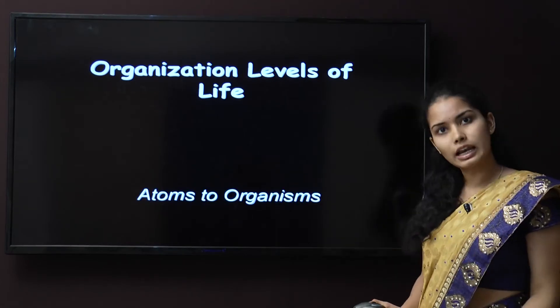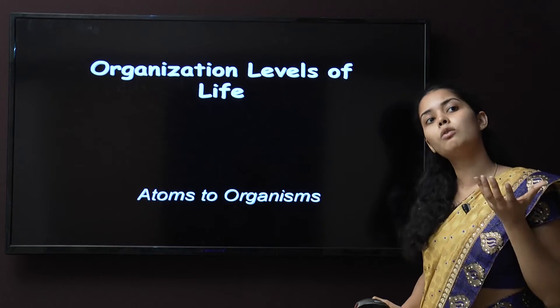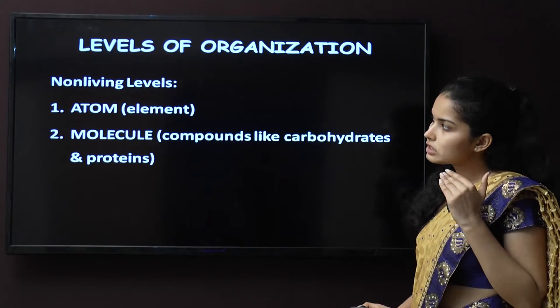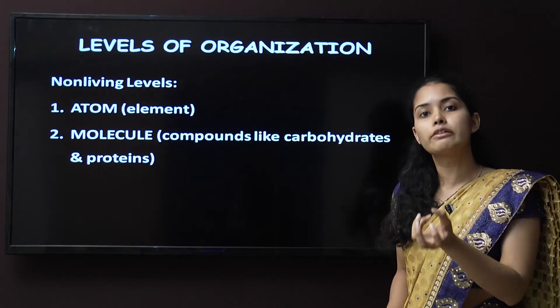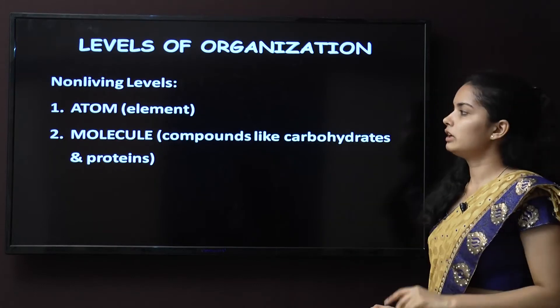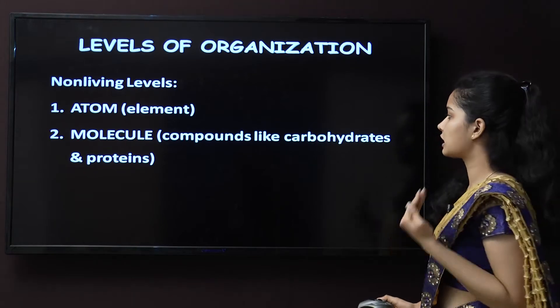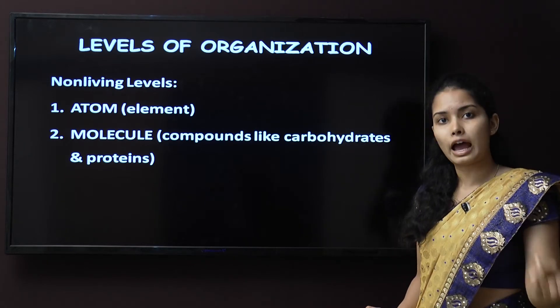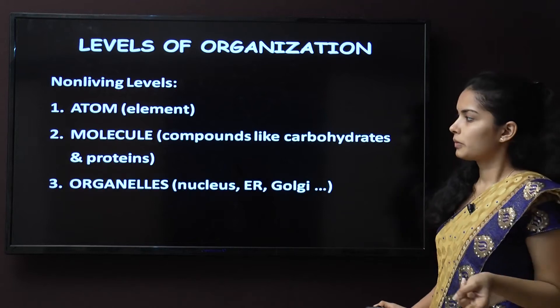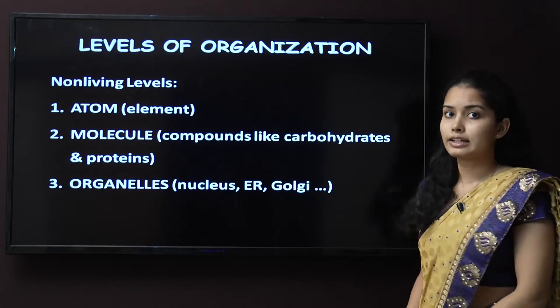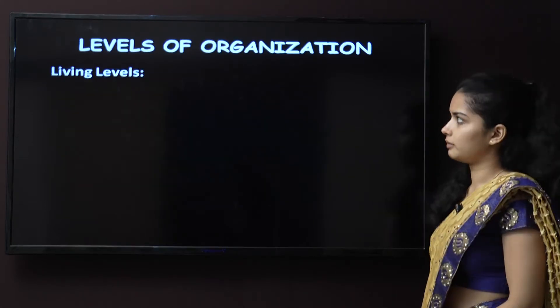Now, the organization levels of life — from atoms to organism. In non-living things, the levels start with the atom — the smallest unit of everything, meaning indivisible in Greek. Atoms form elements, which form molecules — compounds like carbohydrates and proteins, formed when two atoms combine by covalent or ionic bonds. From molecules, organelles are formed — such as nucleus, endoplasmic reticulum, and Golgi body.